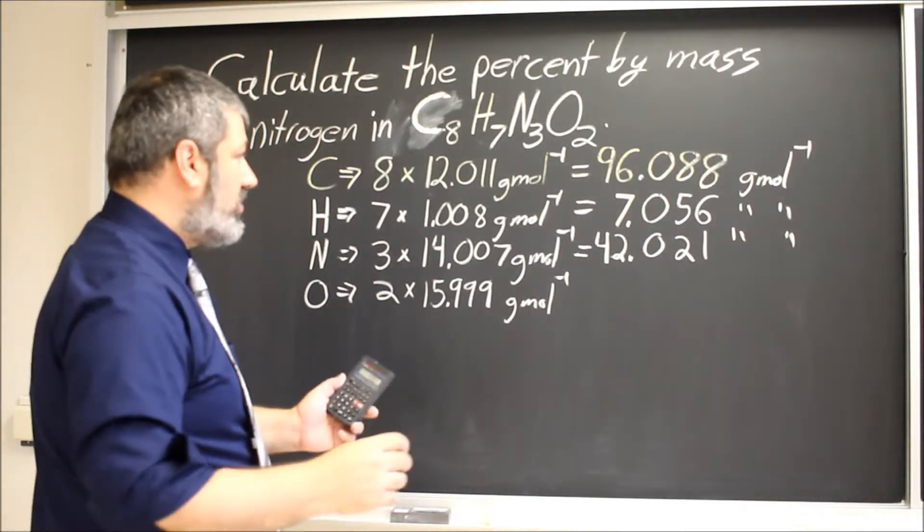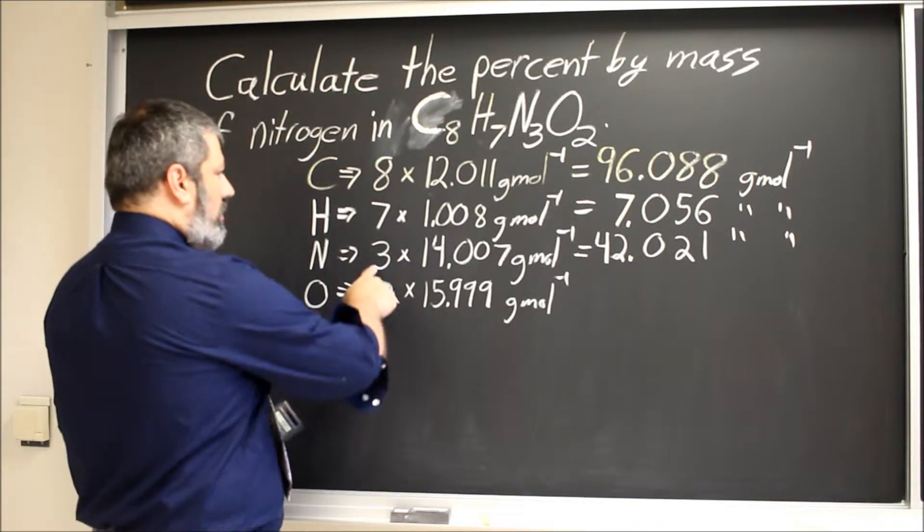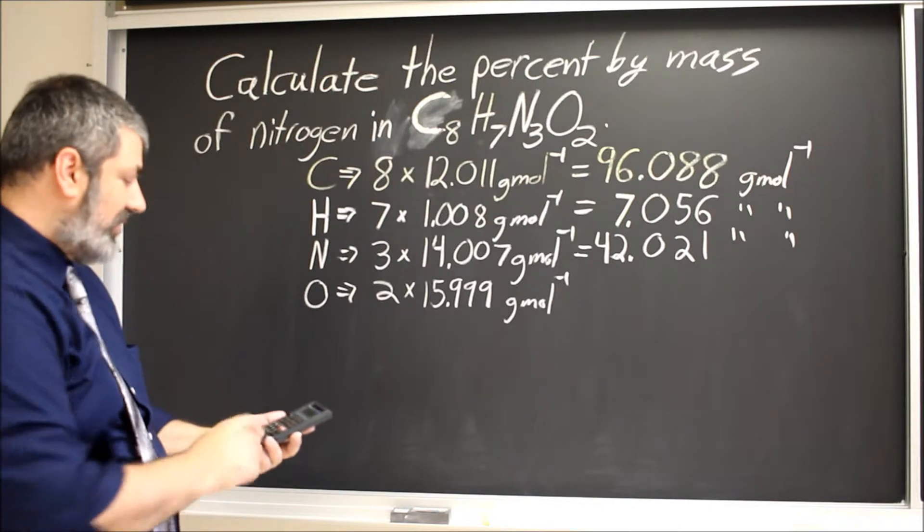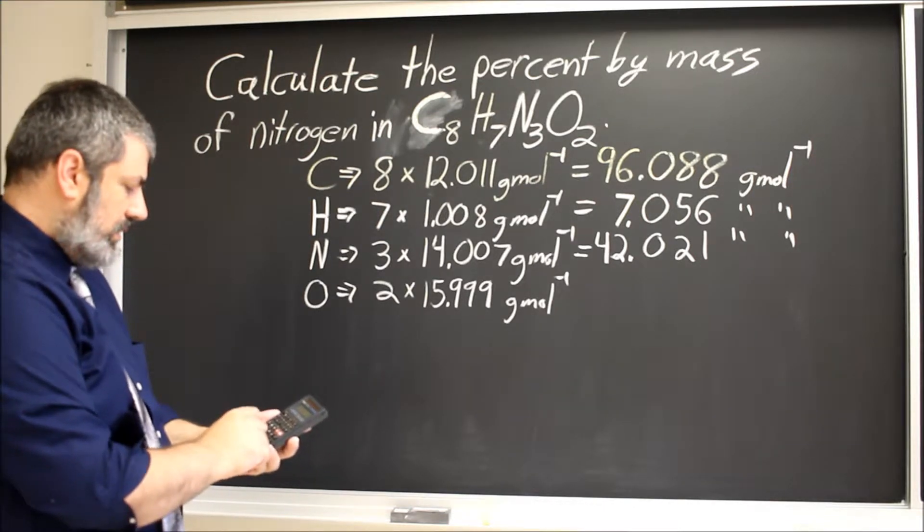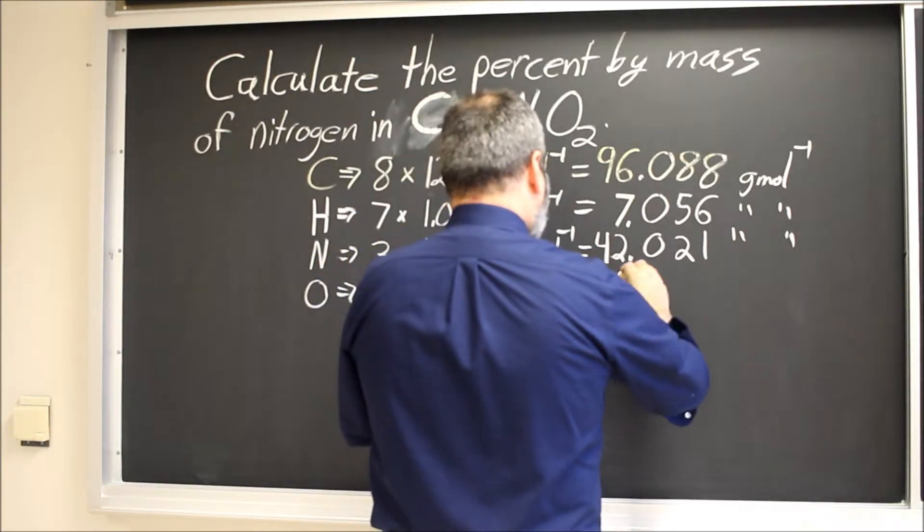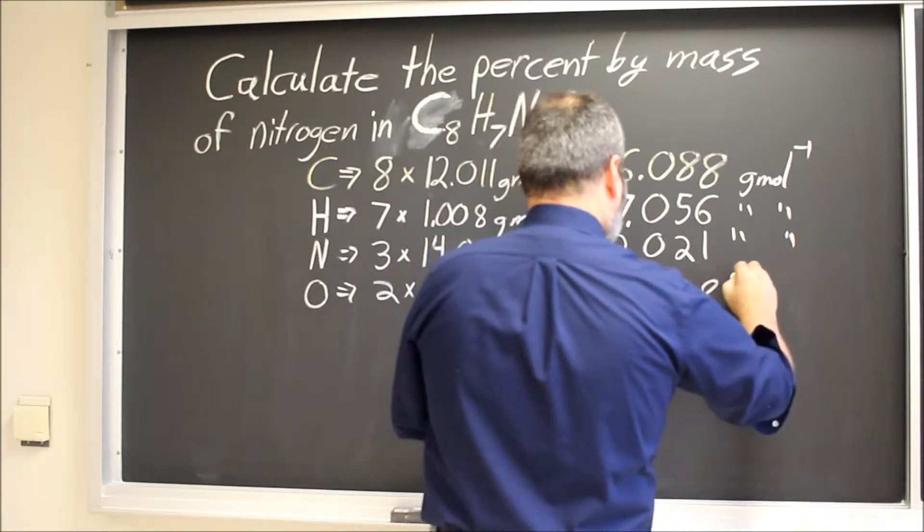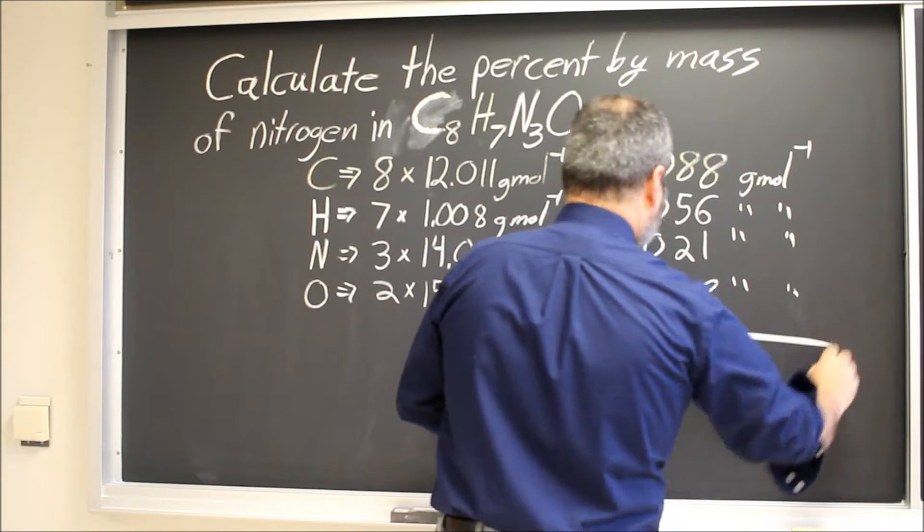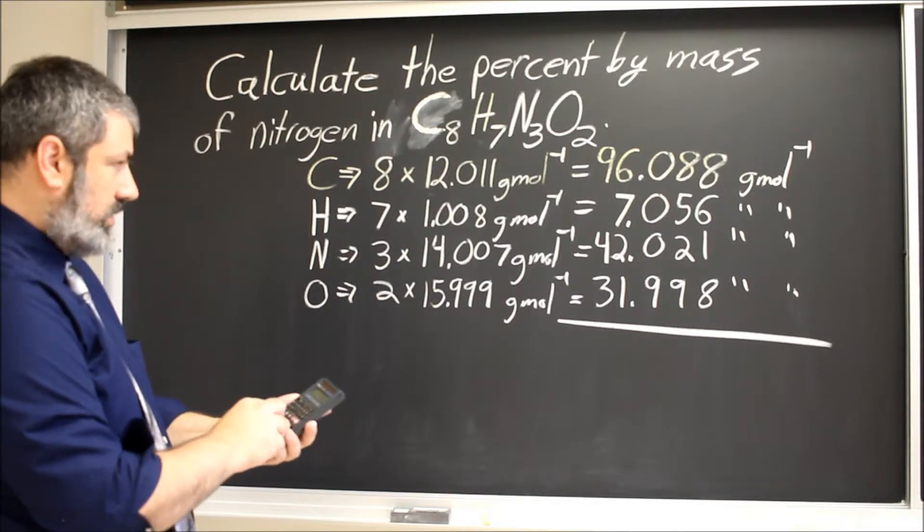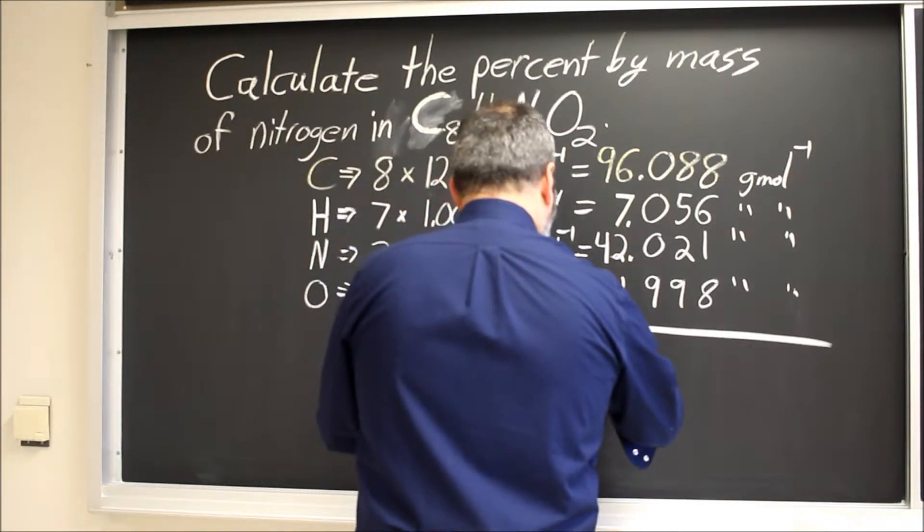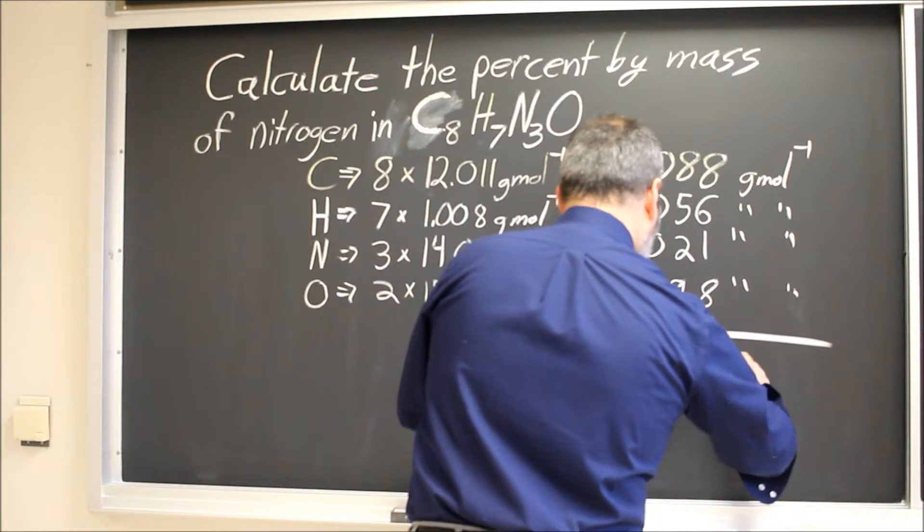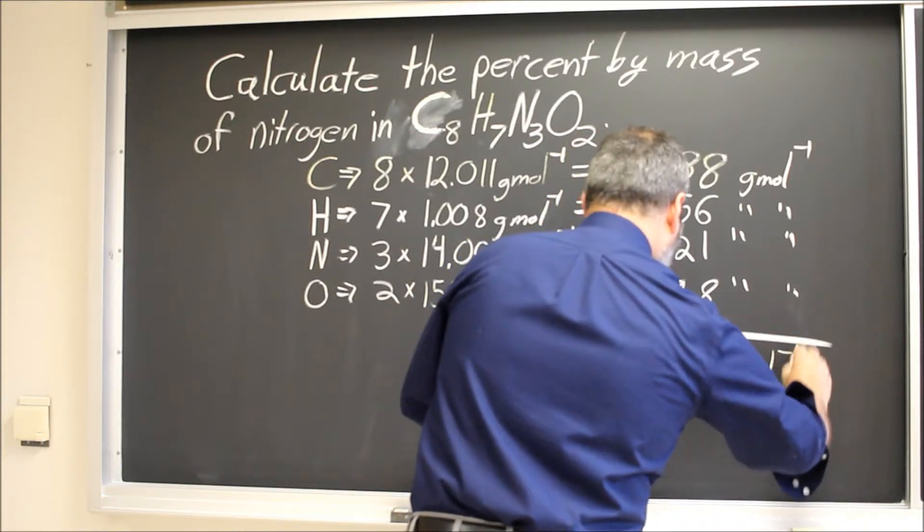If I shove all my numbers into my calculator, I will get the molar mass of the entire compound, but then I still have to go back and get the molar mass of the nitrogens by themselves, whereas here I've got it explicitly written out. And the mass of the oxygens, also grams per mole. So now we add all these numbers up to get our total molar mass. This gives me 177.163 grams per mole.